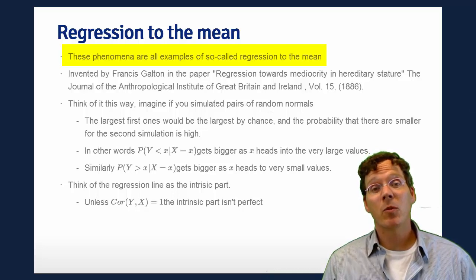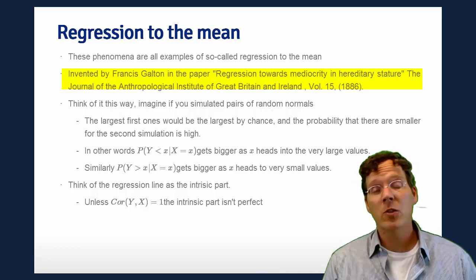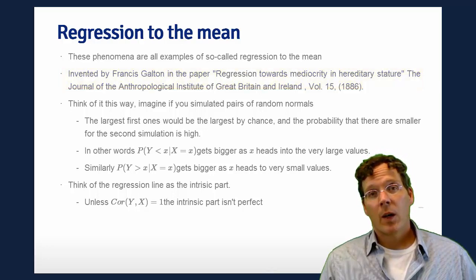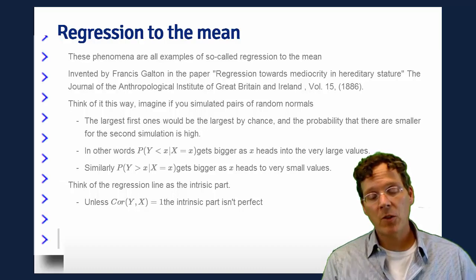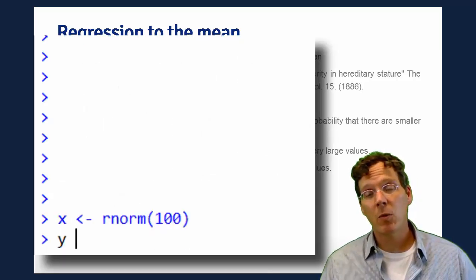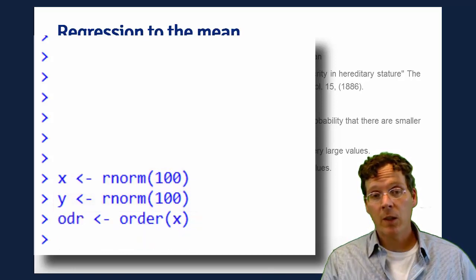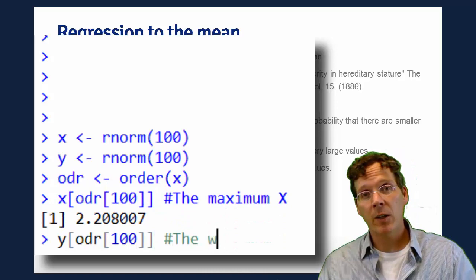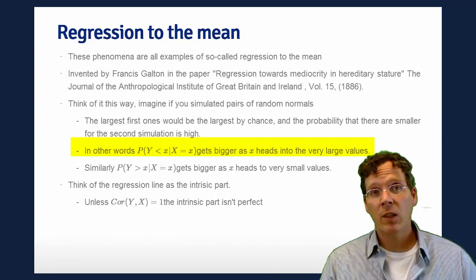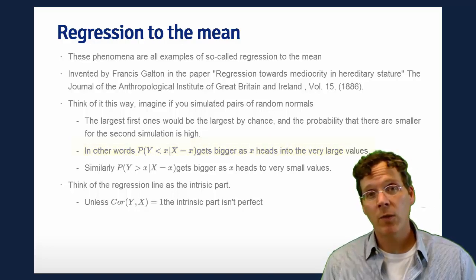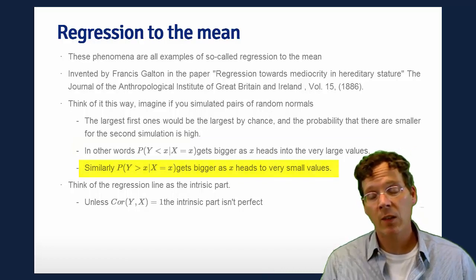These phenomena are all examples of so-called regression to the mean. Regression to the mean was invented by Francis Galton in this famous paper, Regression Toward Mediocrity and Hereditary Stature. I like to think of regression to the mean by thinking of the case where it's 100% regression to the mean. So imagine if I were to simulate pairs of standard normals. They have nothing to do with one another - they're independent standard normals. In this first vector of standard normals that I generate, if I were to take the largest one, the chance that its pair in the second vector is smaller would be high. This is simply saying that the probability that Y is less than X, given X, is going to get bigger as X heads to very large values. In other words, the probability Y is greater than X, given that X equals x, is going to get bigger as X heads to smaller values.